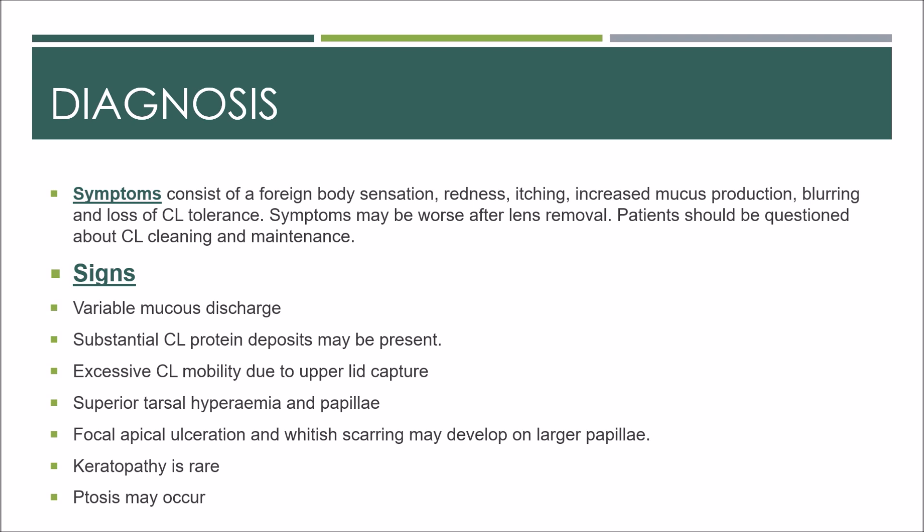By definition, giant papillae are more than one millimeter in diameter, but the clinical syndrome of mechanically induced papillary conjunctivitis commonly features only fine to medium papillae, particularly in early or mild disease. Focal apical ulceration and whitish scarring may develop on large papillae. Keratopathy is rare because of relatively subdued secretion of inflammatory cytokines. Ptosis may occur mainly as a result of irritative spasm and tissue laxity secondary to chronic inflammation.